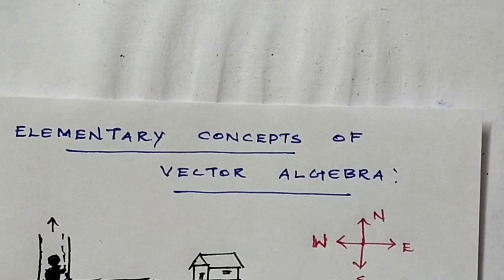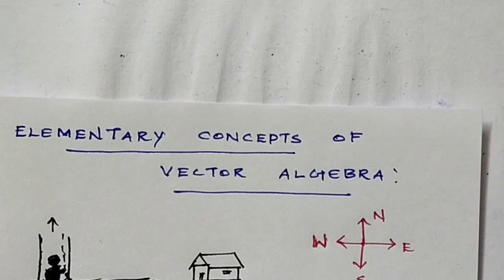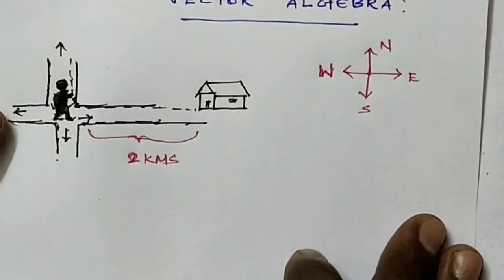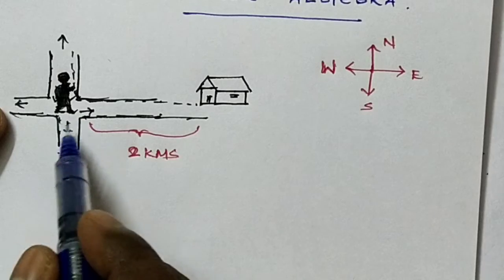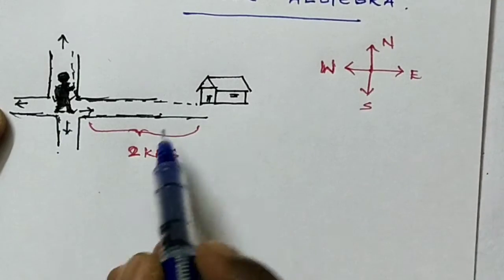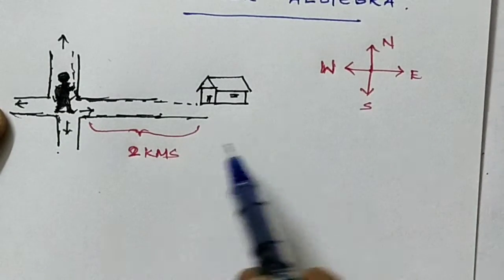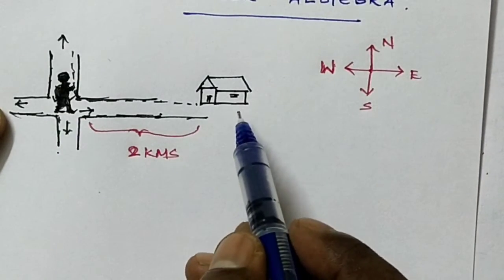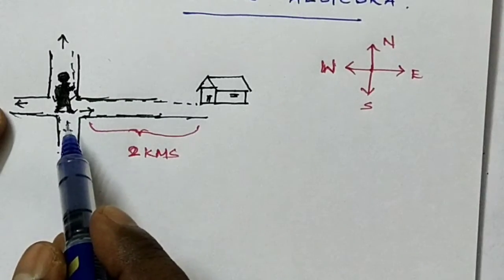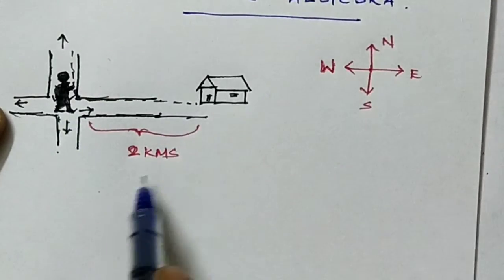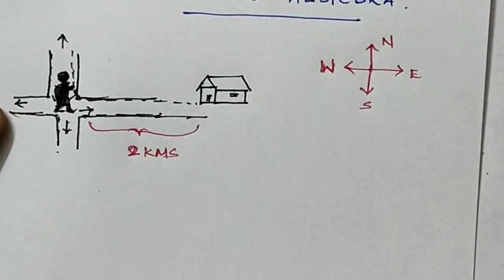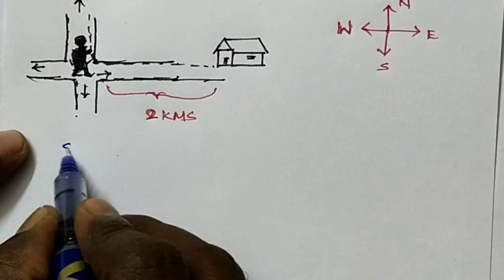Moving to the elementary concept of vector algebra, we discuss scalar and vector quantities. Consider a person at a junction walking two kilometers to reach home. The distance covered is two kilometers — we are using numbers to describe it.